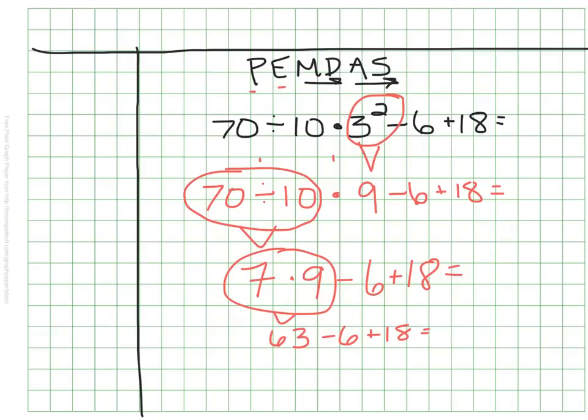I have 2 operations left, a subtraction and an addition. Again, for these 2 operations, I do first-come, first-served, so I will subtract first. I get 57 there, and then the last thing I need to write down is that I still have an addition. That'll be my last step, so I get a total of 75.